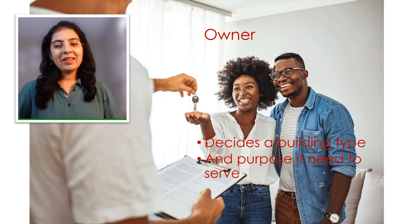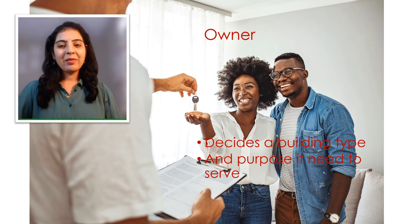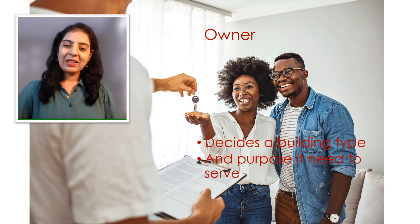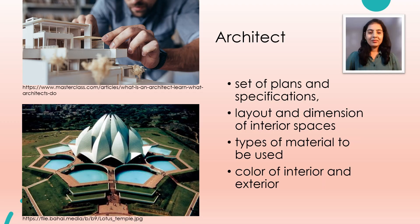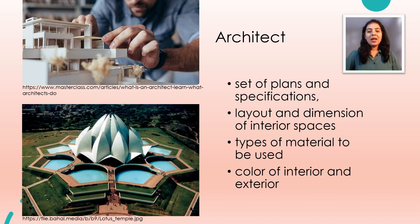When the owner decides the building type and purpose it needs to serve, he contacts the architect. The owner and architect discuss the function of the building and decide the shape and size of the structure according to its usage. The architect then prepares a set of plans and specifications covering the layout and dimensions of interior spaces, the type of materials to be used, and the colors of the interior and exterior.